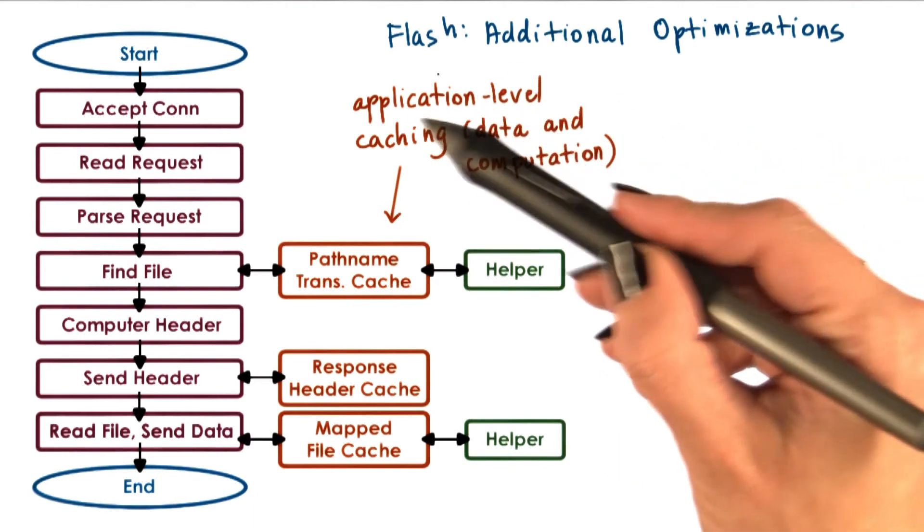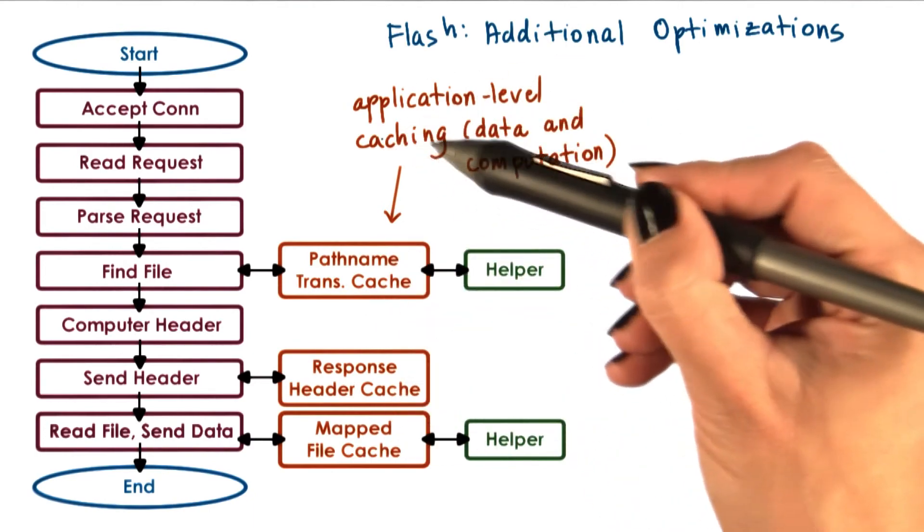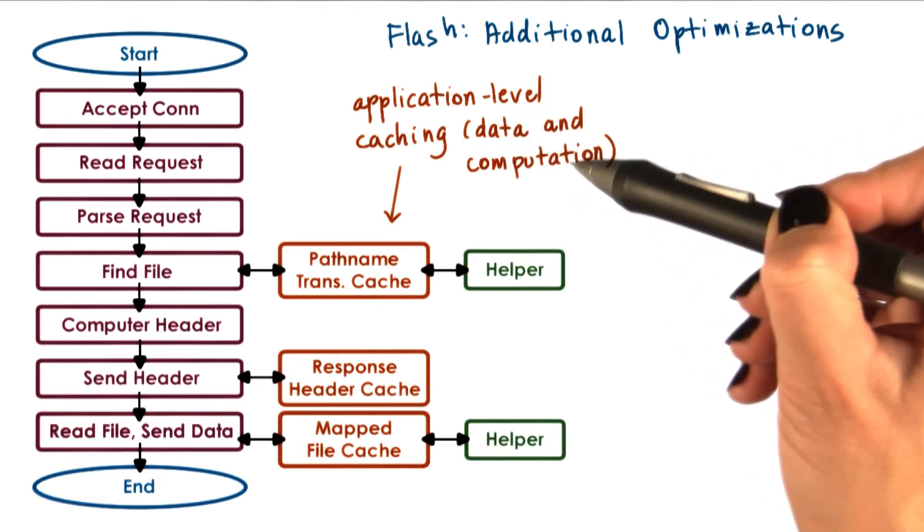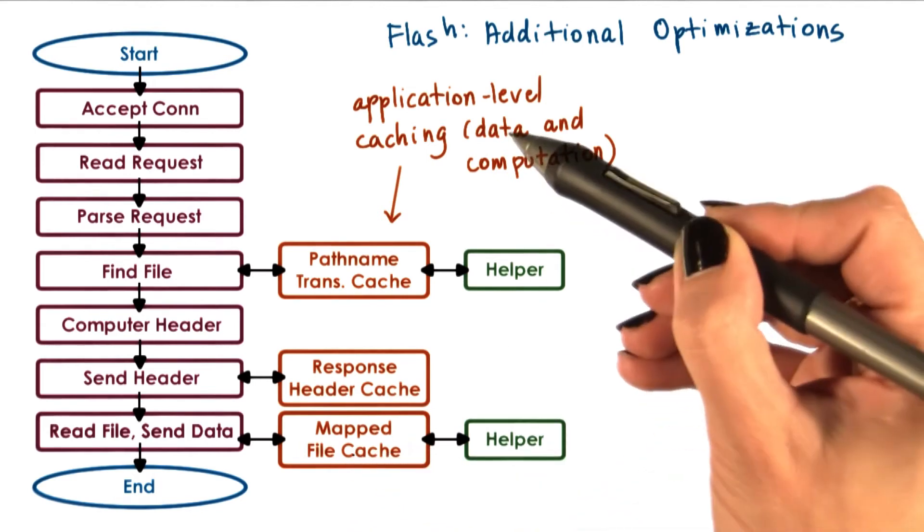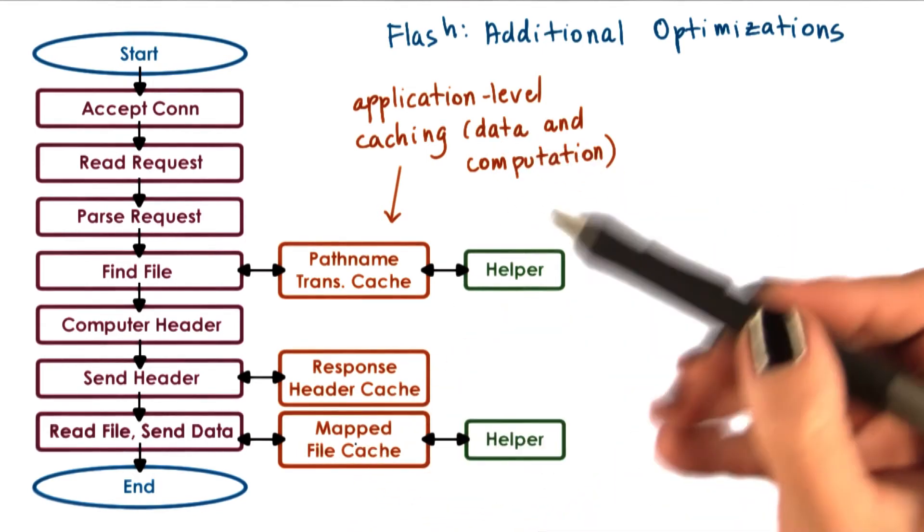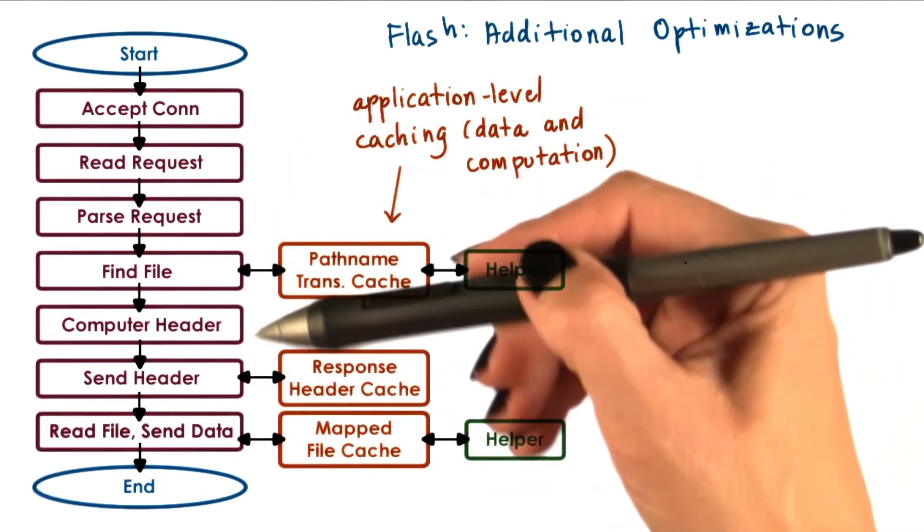First of all, Flash performs application-level caching at multiple levels on both data and computation. It's common to cache files—this is data caching. However, in some cases, it makes sense to cache computation. In the case of the web server, the requests are for files.